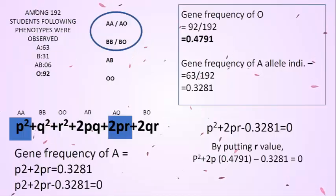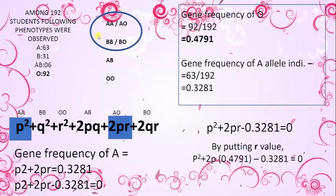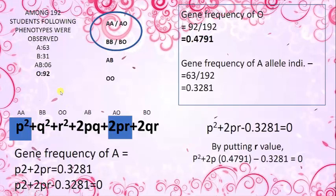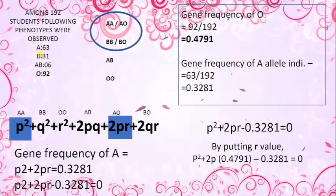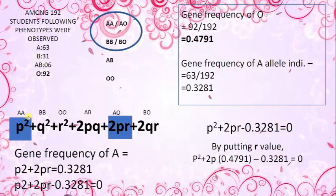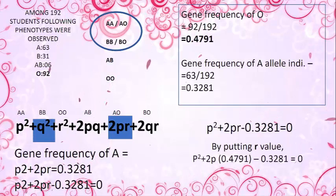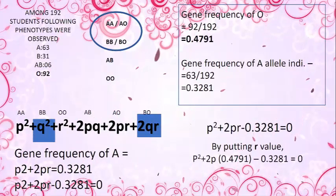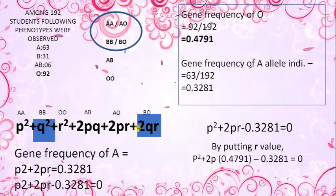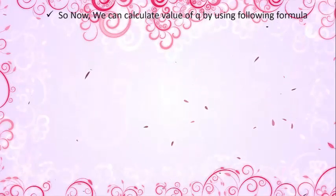We can apply the same quadratic method to find the gene frequency of allele capital B (small q). We take q-squared plus 2qr for blood group B, and use the same calculator approach. However, there is also a simpler method available for deriving the value of q.